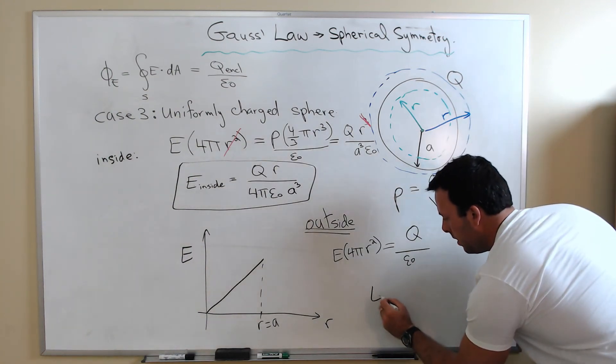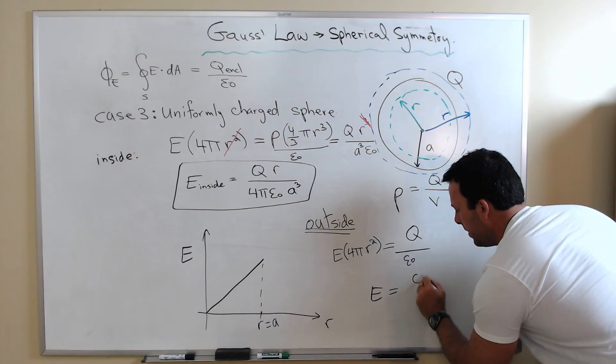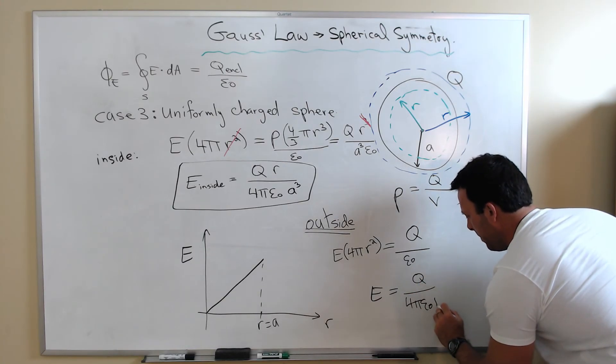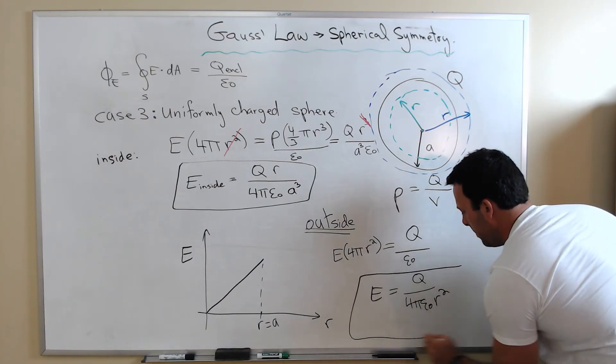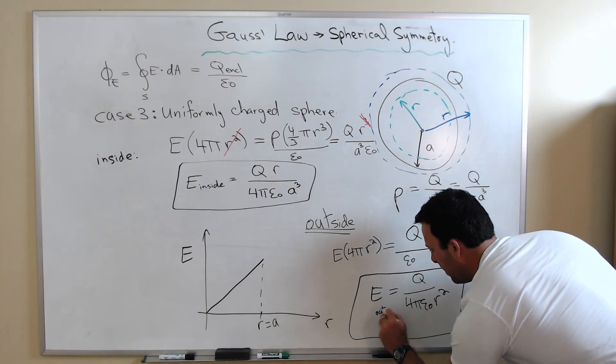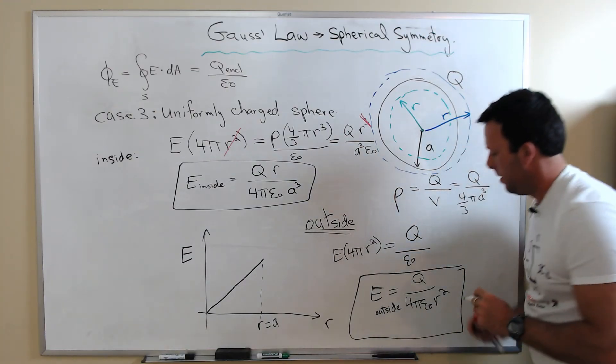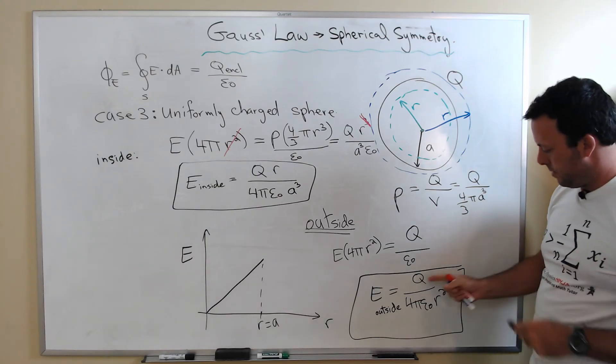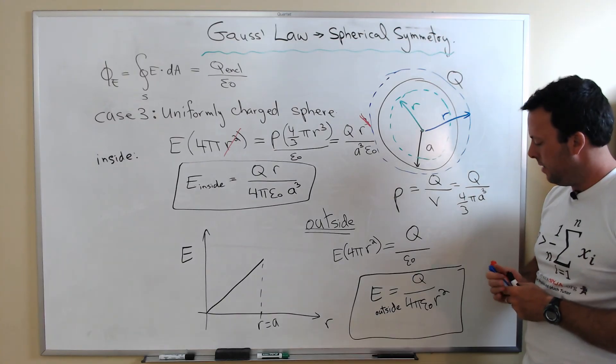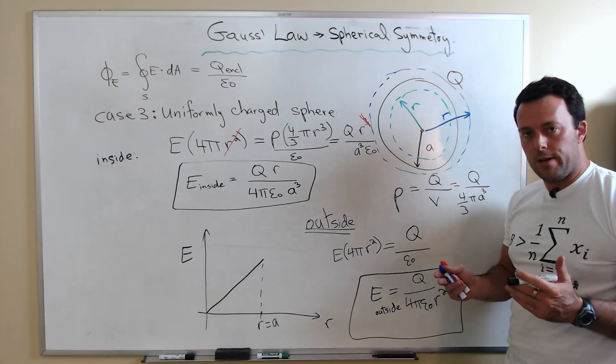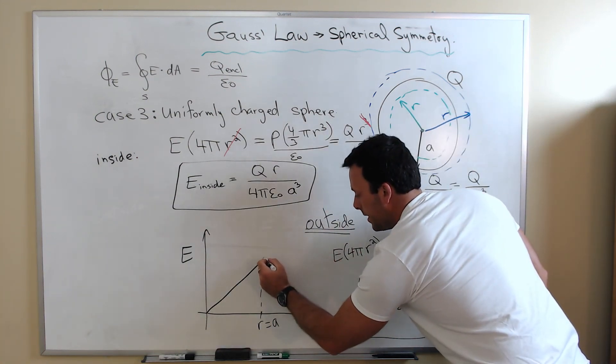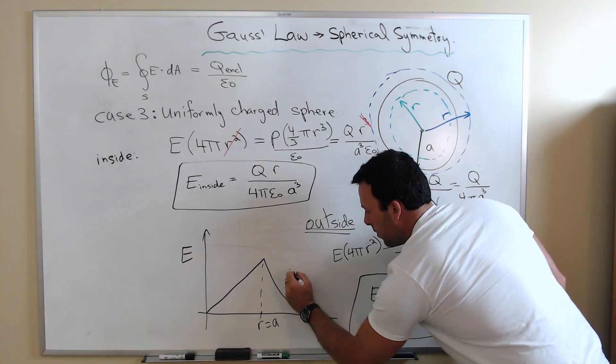At the end, we get outside, isolate for the electric field. You get a result you've seen many times now. There's the field outside. That's just Q divided by 4 pi epsilon zero multiplied times R squared. That looks like the same dependence as our point charge. So when you're outside the sphere, the electric field falls off as 1 over R squared.